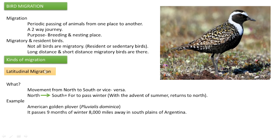The first kind is latitudinal migration. Latitude means from north to south — birds migrating in that direction, from north to south and vice versa. Such type of migration is called latitudinal migration.